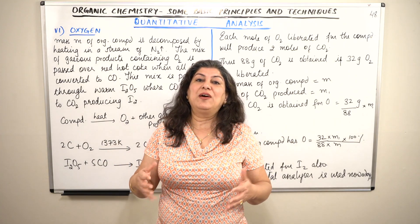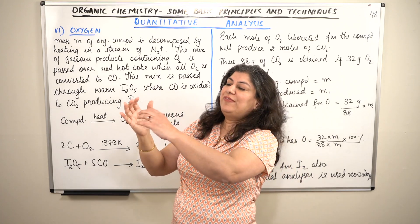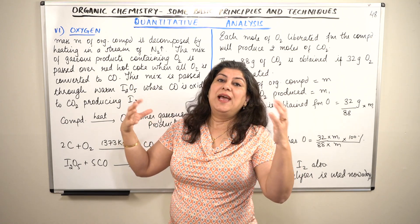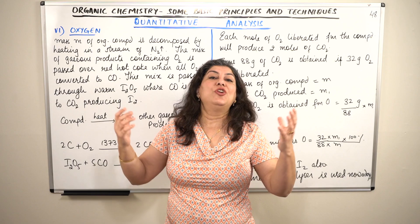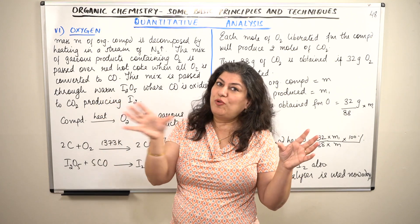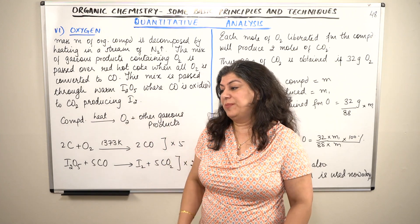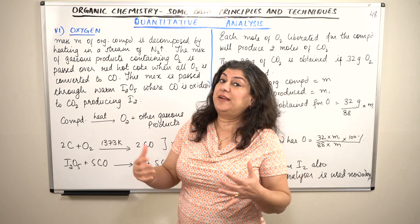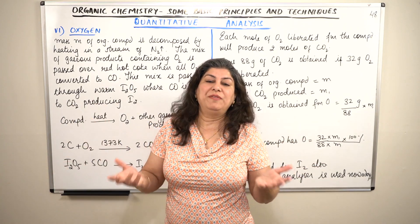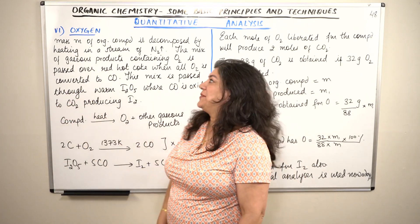Therefore, we do not have a direct test to identify the presence of oxygen. But when we find out the mass percentages of each element and sum them all up, if the total does not come to 100, whatever percentage is left would be that of oxygen. So one way is: 100 minus the sum of all the other mass percentages gives you the mass percentage of oxygen. There is also a direct method.